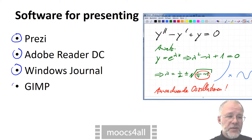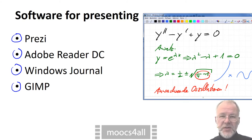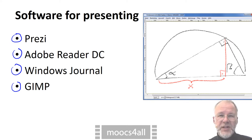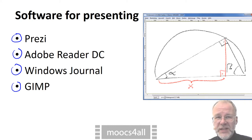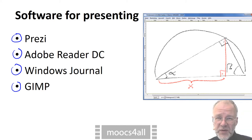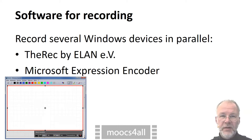If you like pencil strokes or simulated paint brushes, you can use the open source image editor GIMP. Again, you would write and draw in real time and capture what you say and do with screen recording software.